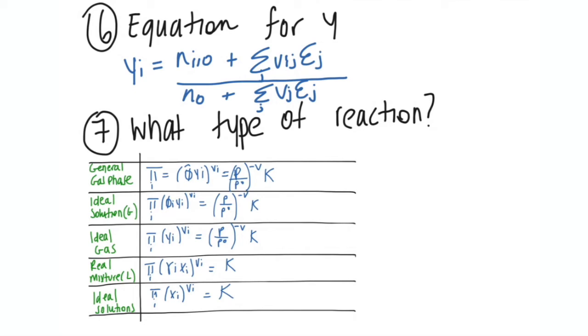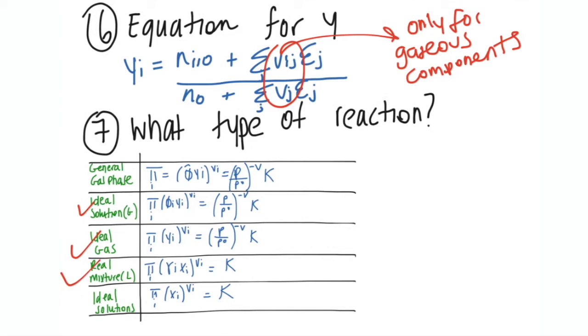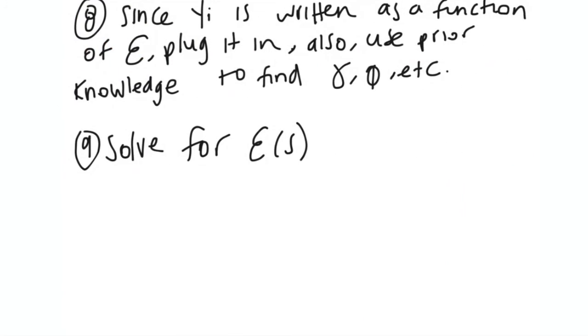And notice that this νj is calculated only for the gas, only for gaseous components. And then equation number - not equation - step number seven would be to determine what kind of reaction are you dealing with. So is it going to be an ideal solution, is it going to be an ideal gas, is it going to be a real mixture, or an ideal solution, or a liquid?